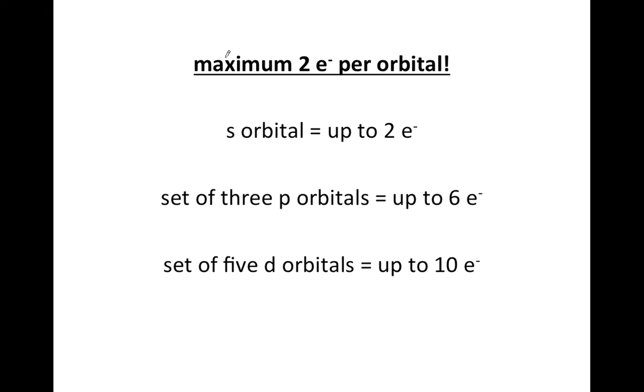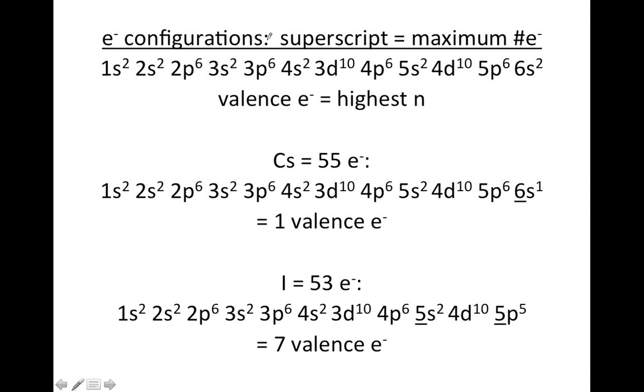Remember that the maximum number of electrons per orbital is two. An s orbital can fit up to two electrons. p orbitals come in sets of three. Each fits two electrons, so you can fit up to six electrons in a set of p orbitals. And d orbitals come in a set of five. Each fits two electrons, so you can fit up to ten electrons for a set of d orbitals.